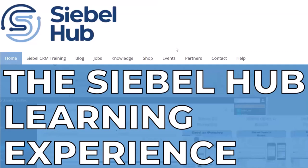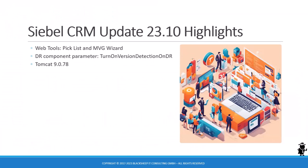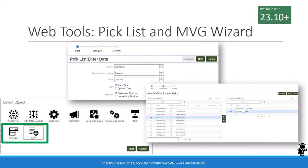Let me share my screen and talk about the latest Siebel developments. Since the October Siebel Friday was missed, we cover 23.10 first — it'll be quick. The first feature: web tools gets two more wizards beyond 23.10. The object window gets a bit crowded with picklist and MVG wizards, familiar from Siebel Tools, and they work just as well in web tools, bringing more functionality to the browser.